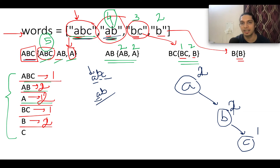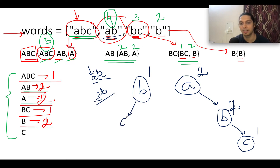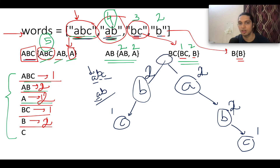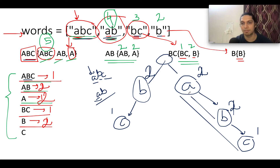Next we see 'bc' — the first character is 'b', so the score of 'b' gets updated to one. The next character is 'c', so the score of 'bc' gets updated to one. Next we have 'b' — 'b' already exists in the trie, so the score of 'b' gets updated to two. This is our entire trie. We have the root and all nodes with their associated scores.